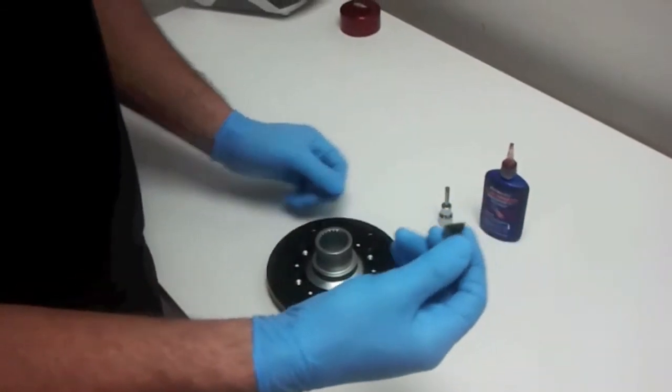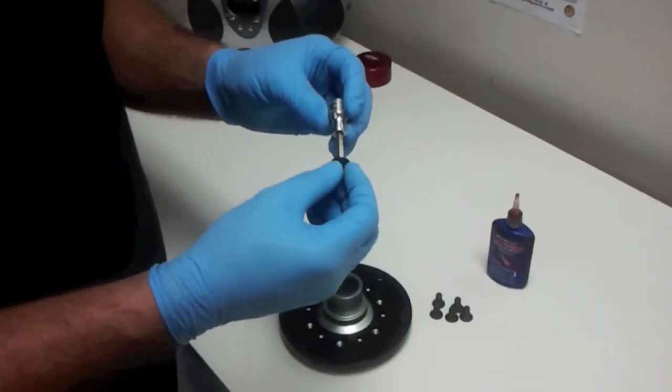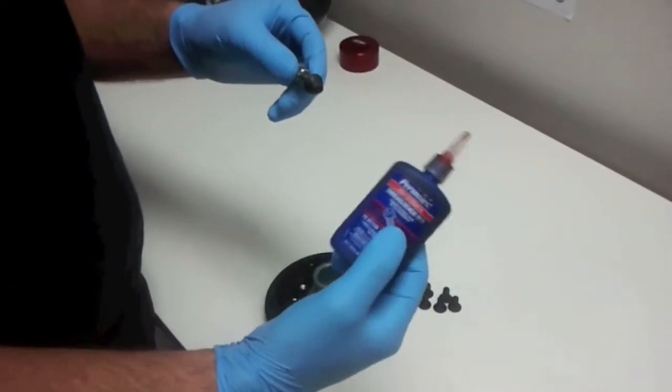These are the tapered bolts for the Aluminum Rotor Hub. You're going to need a 5mm Allen socket for those. Make sure you use Red Loctite in these.